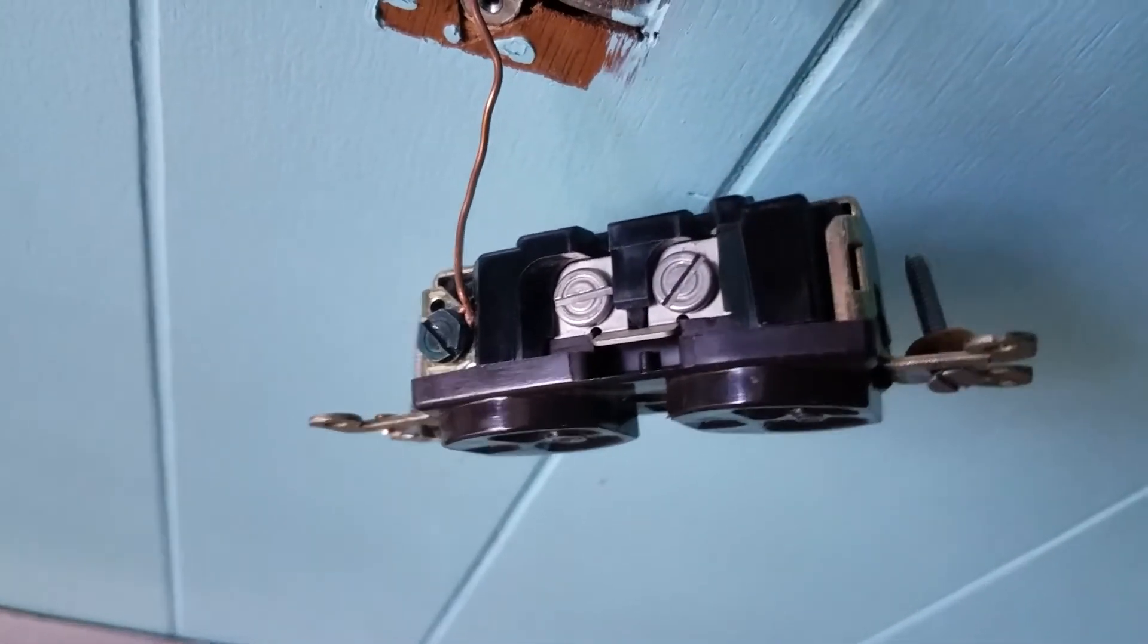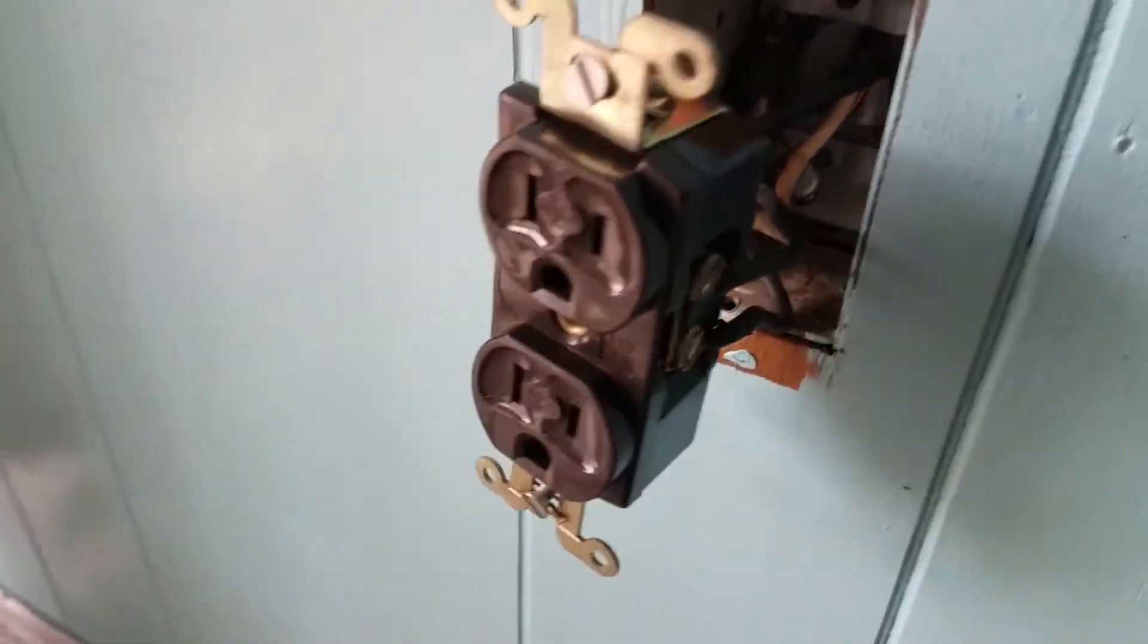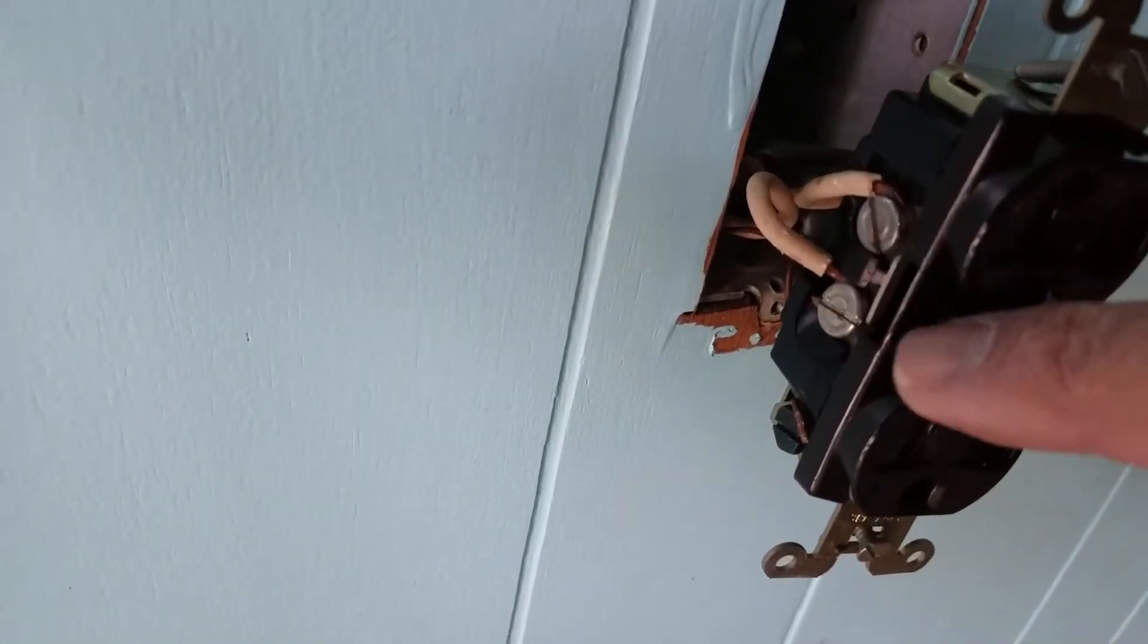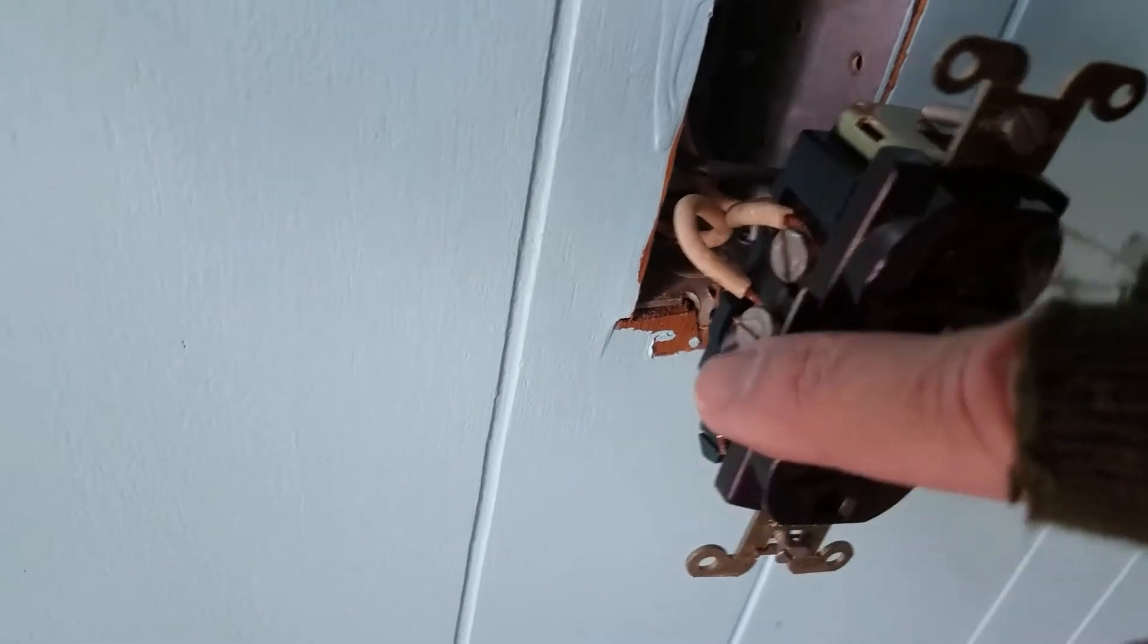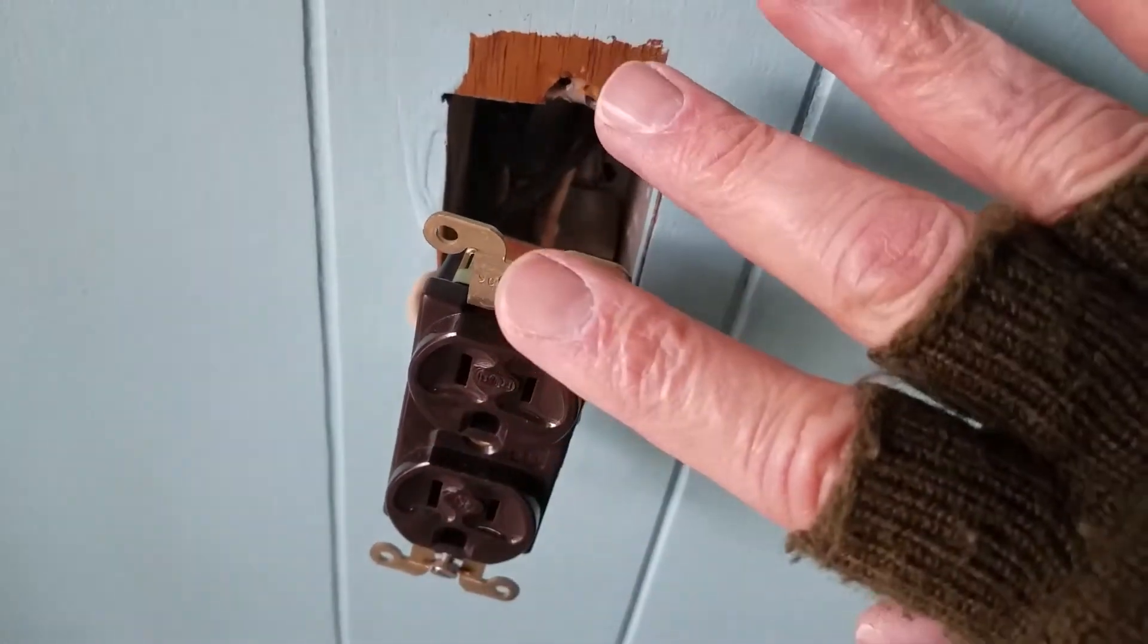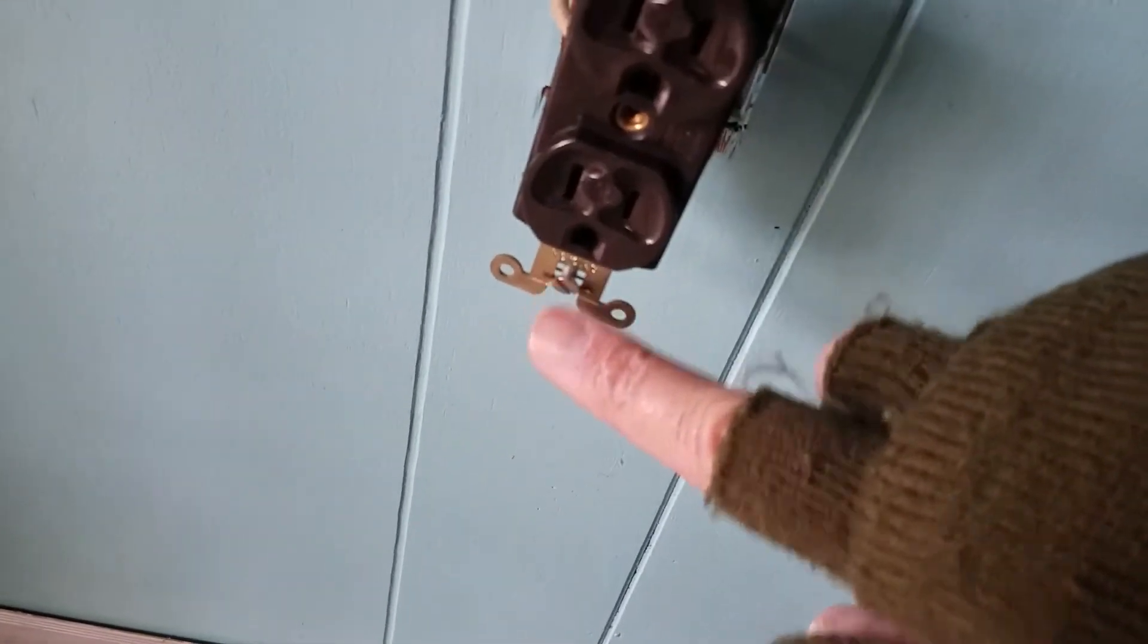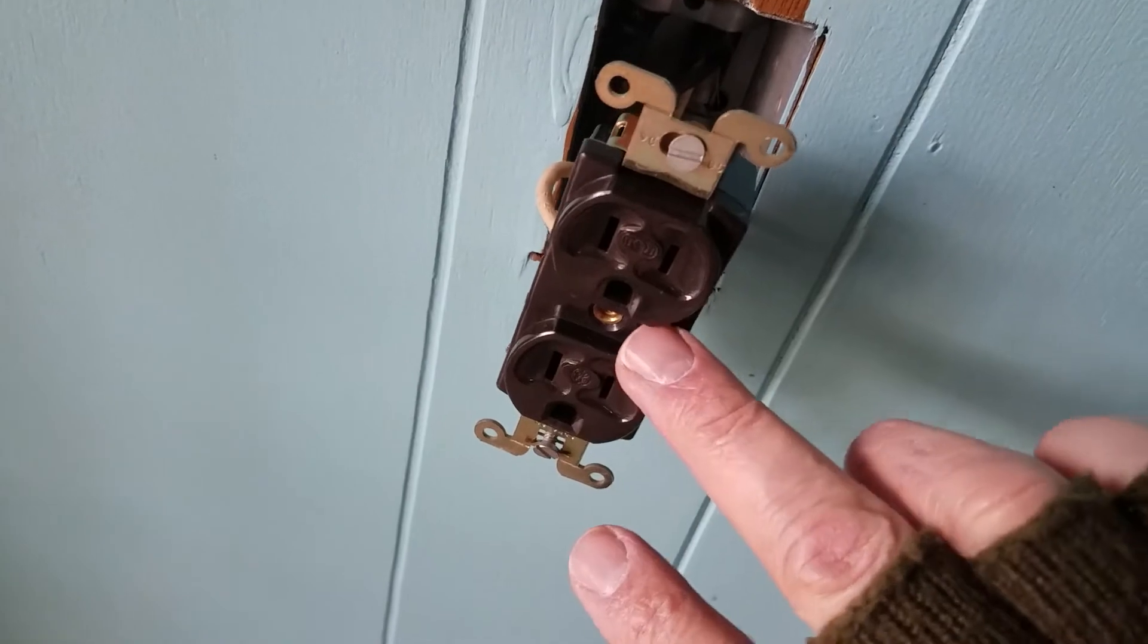We now have all our wires attached: black on the brass side, white on the silver white screws. Those are super tight. We have our ground hooked up, so now we're ready to fold back these wires into the outlet box and attach via the top screw, bottom screw, cover plate that screws on in the center and you're done.